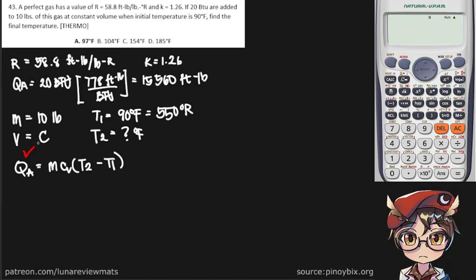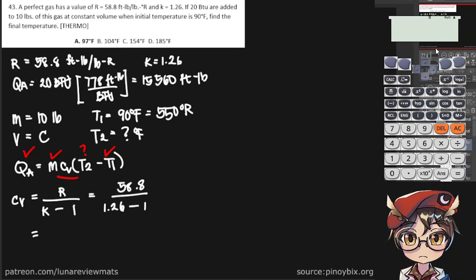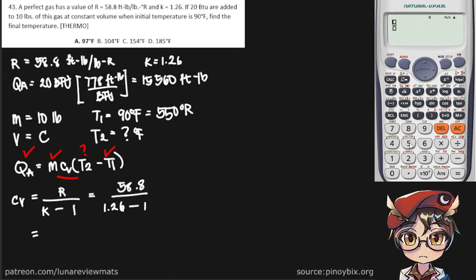We already have Q, M, and T1, and we're trying to find T2. First, we have to find Cv using the equation: Cv equals the gas constant R divided by the specific heat ratio K minus 1. That's 58.8 divided by 1.26 minus 1.